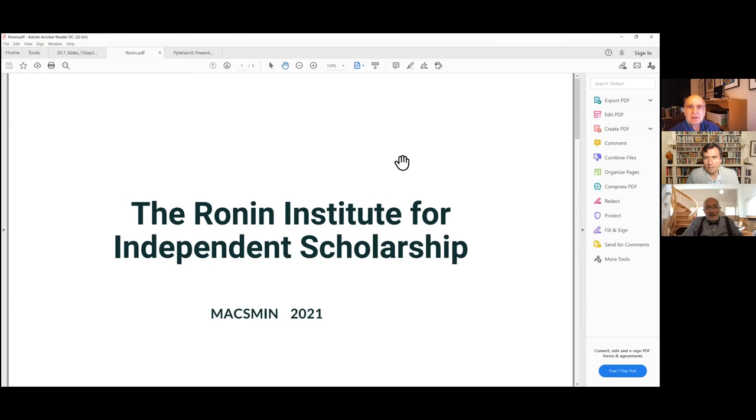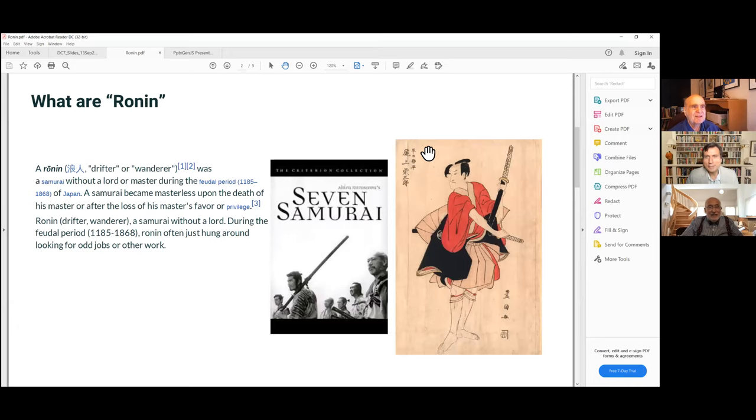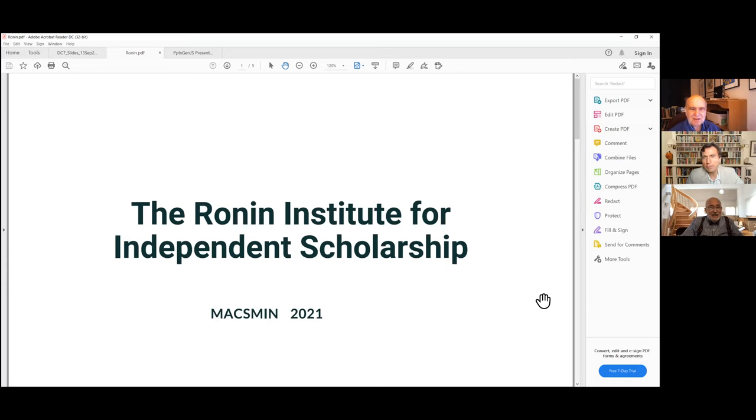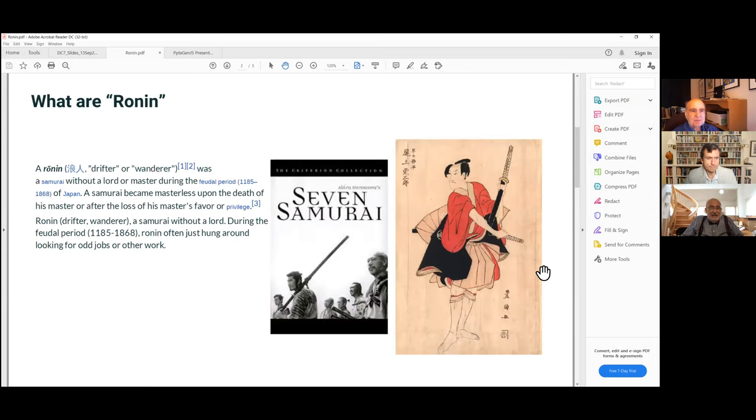Thank you and welcome to our next talk by Larry Anderson and Herbert Bernstein, who will be talking first about the Ronin Institute and then the science. I'm going to spend a couple of minutes talking about the Ronin Institute, of which Herbert and I are both members. First, what is a Ronin? A Ronin in Japanese history is a wandering man who served some master and no longer does.